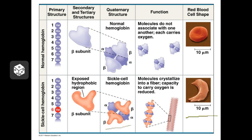Sickled cells don't carry oxygen as efficiently as regular red blood cells. They also tend to pile up and get stuck in the capillaries, so they can cause a lot of swelling and pain, especially in the joints. This is an example of how a change in a single amino acid can have a big physical effect on the protein and on the cells in which that protein is found.